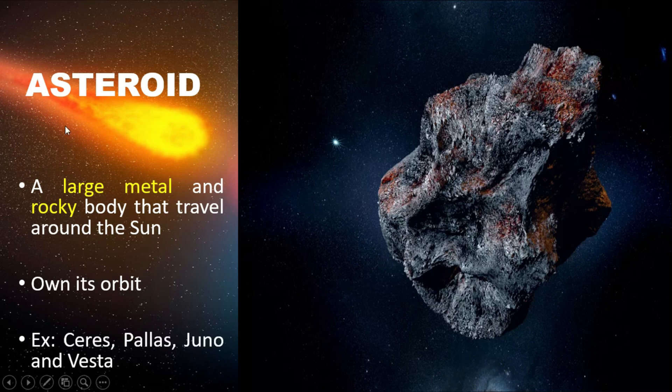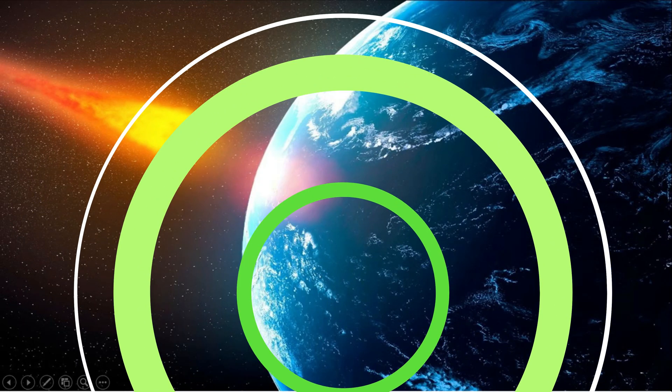Examples of asteroids are Ceres, Thales, Juno, and Vesta. This is the examples of asteroid diagram.